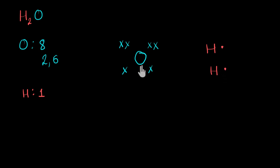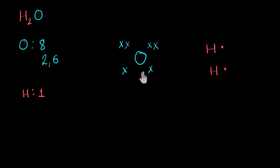Now these atoms are going to share electrons and form covalent bonds to become more stable. Every atom wants to become more stable, just like noble gases, which are stable because most of them have eight electrons in their outermost shell. So oxygen will want to have eight electrons — a complete octet. It currently has only six, meaning it needs two more. To get two electrons by sharing, it will have to share two of its own electrons. As for hydrogen, it needs only two electrons to become stable, just like the noble gas helium — a complete duplet.